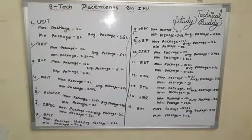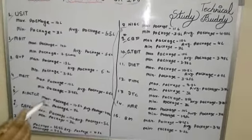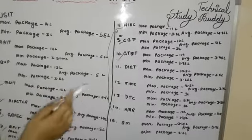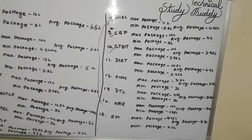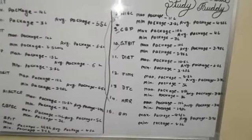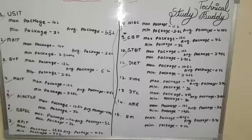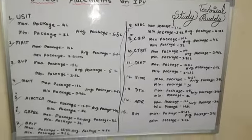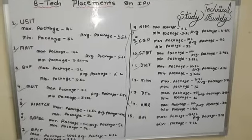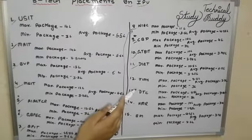Next is GTBIT, or Guru Teg Bahadur Institute of Technology. The maximum package is 10 lakhs, average is 3.5 lakhs, and minimum package is 2.7 lakhs. There are many startup companies that provide lower packages and are allowed on campus. Next is DIET Megatronics or Tool branch. The maximum package is 10.5 lakhs and the average package is 3.5 lakhs.